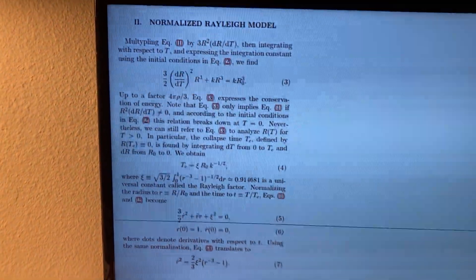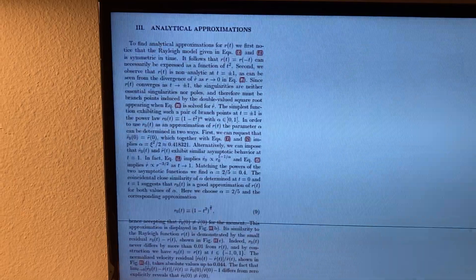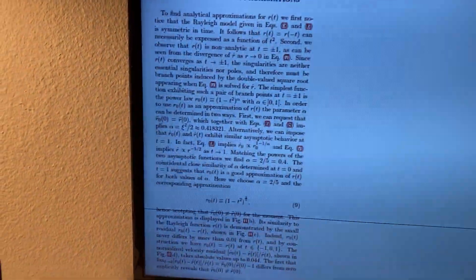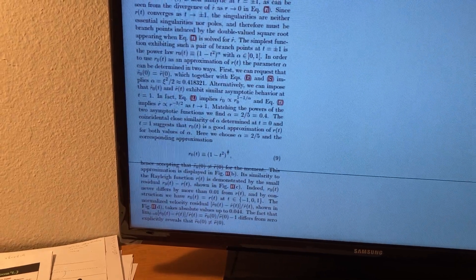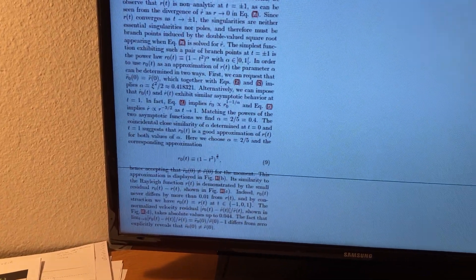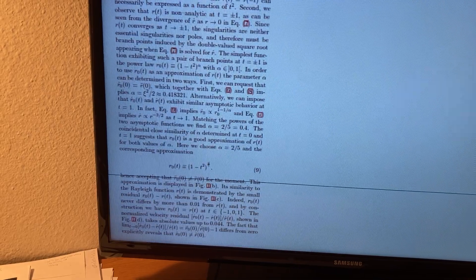Using this and other properties of the solution function, he chose the closed form approximation function r sub 0 is equal to 1 minus t squared to the power of 0.4, which is never more than 0.01 away from what it's supposed to be.